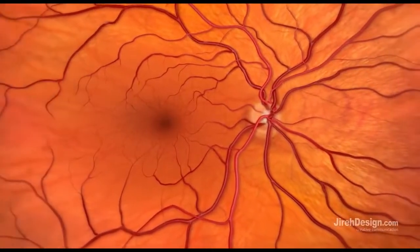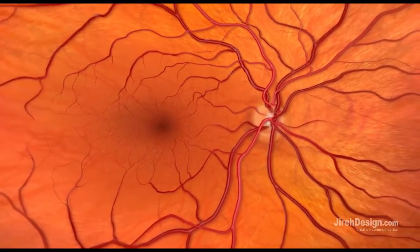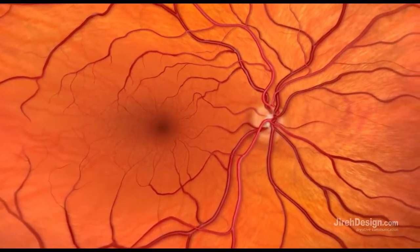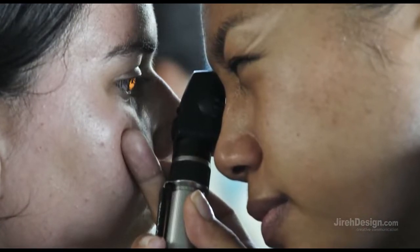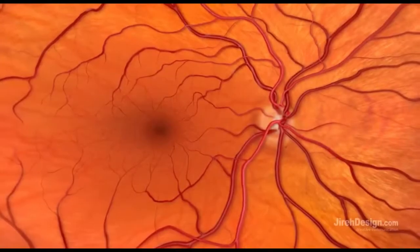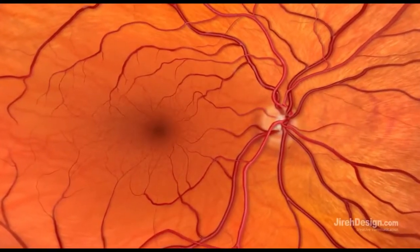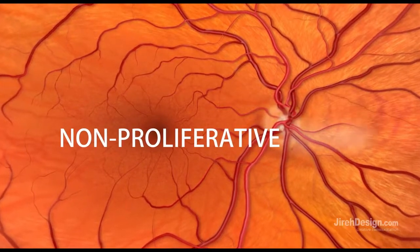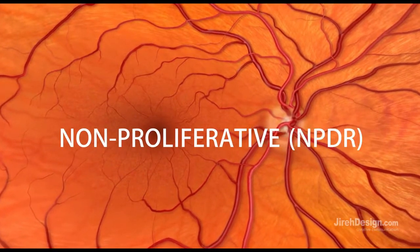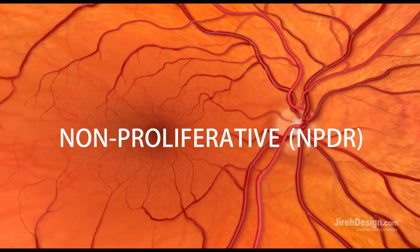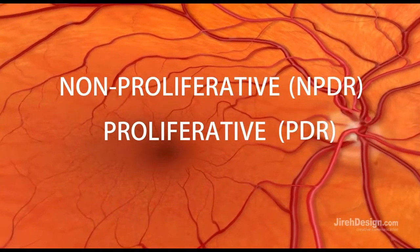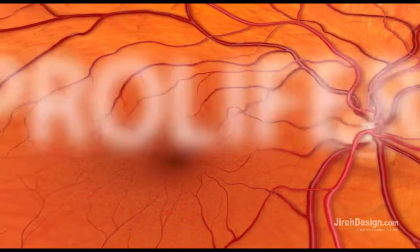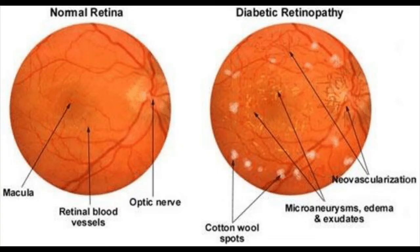Why does diabetic retinopathy develop? How does high blood sugar cause it? When you have high blood sugars, your body cannot utilize the sugar, so that sugar has to go somewhere. We call these alternative pathways — like the sorbitol pathway, protein kinase C, hexosamine pathway, etc.